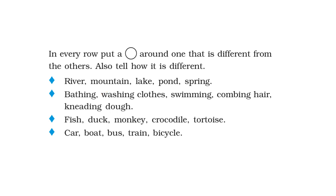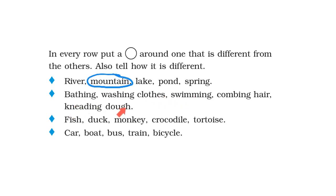Now I am going to circle the mountain. In the next row: bathing, washing clothes, swimming, combing hair and kneading dough. I need water for bathing, washing clothes, swimming and kneading dough. But I do not need water for combing my hair. Therefore, combing hair is the odd one out. I am going to circle combing hair.